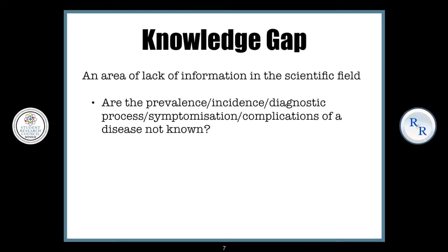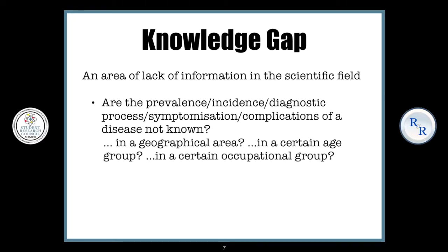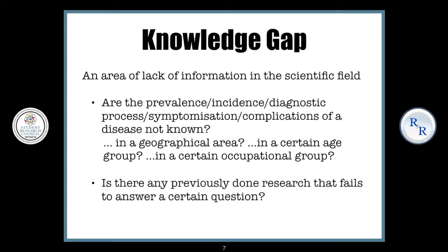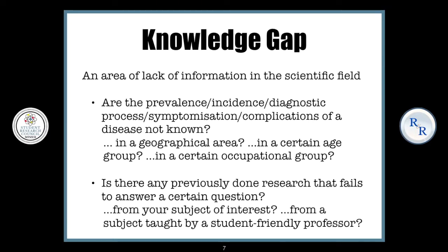Since we are UG students, it's quite difficult to answer such vast questions. So what we can do is narrow it down — whether such a thing can happen in a particular geographical area, in a certain age group, in a certain occupational group, etc. Another type of knowledge gap is whether a previous research has failed to answer a certain question, and this could be from a subject of your interest or from a subject taught by a student-friendly professor, because this will help you get a guide.